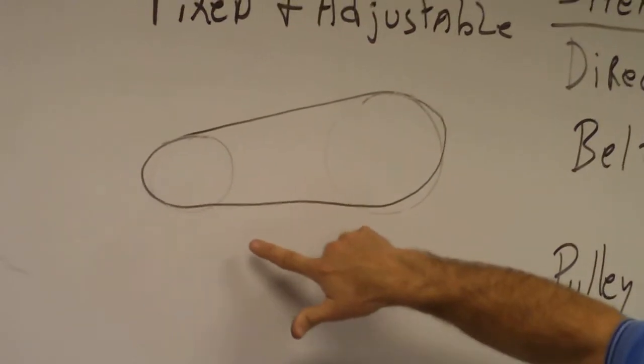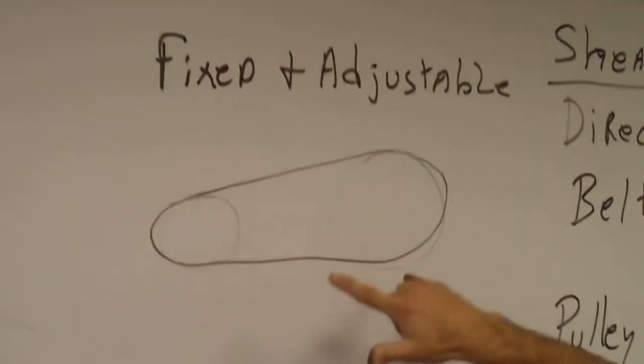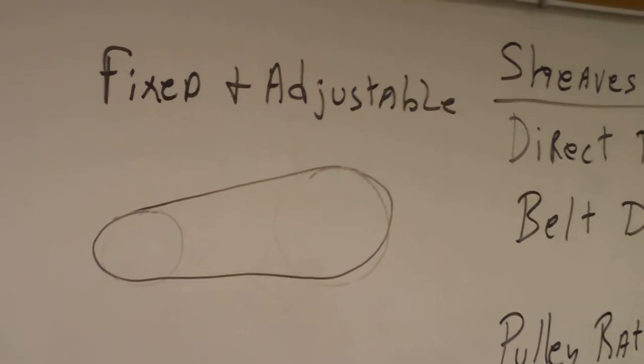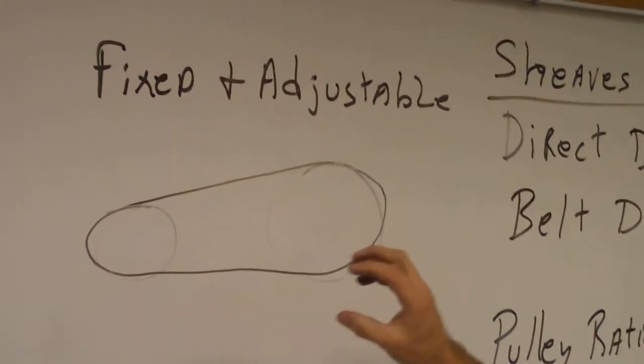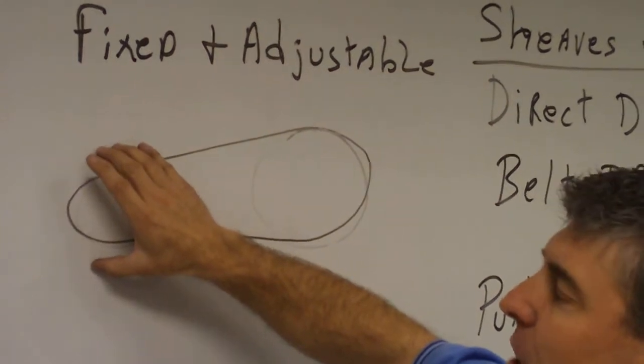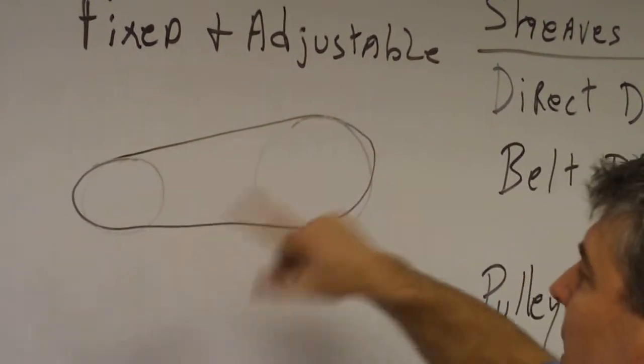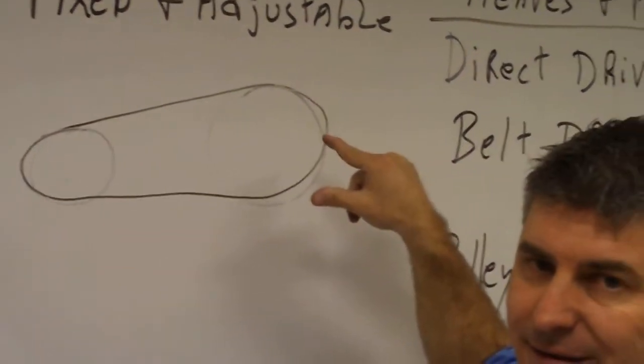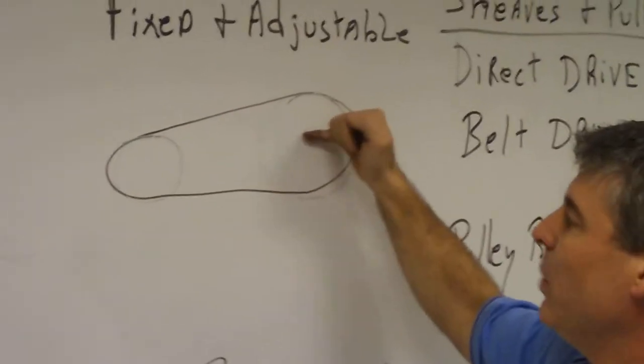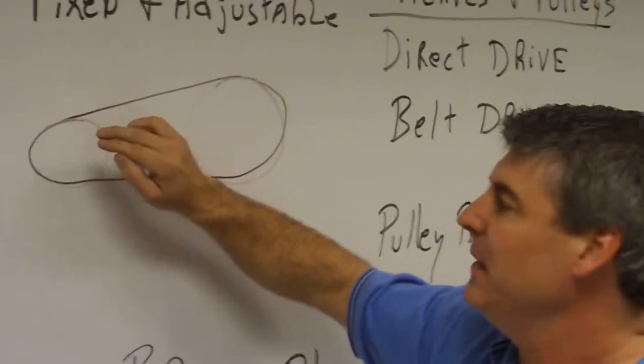Now, the important thing to remember is on these motor and blower sheaves, you have to remember that if you increase the diameter of the motor pulley, you will increase the speed of the fan. Naturally, if they're both the same size, the blower will be turning the same RPM as the motor.